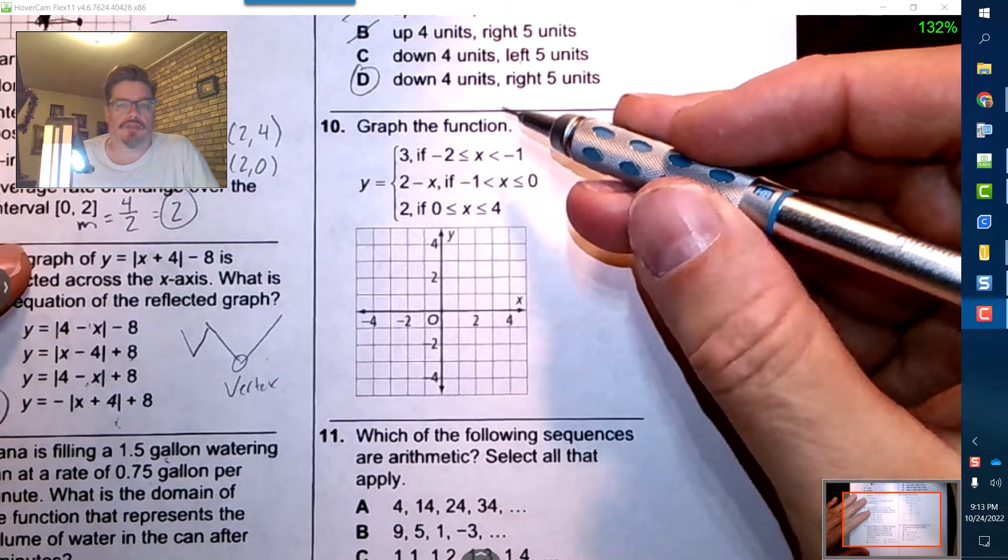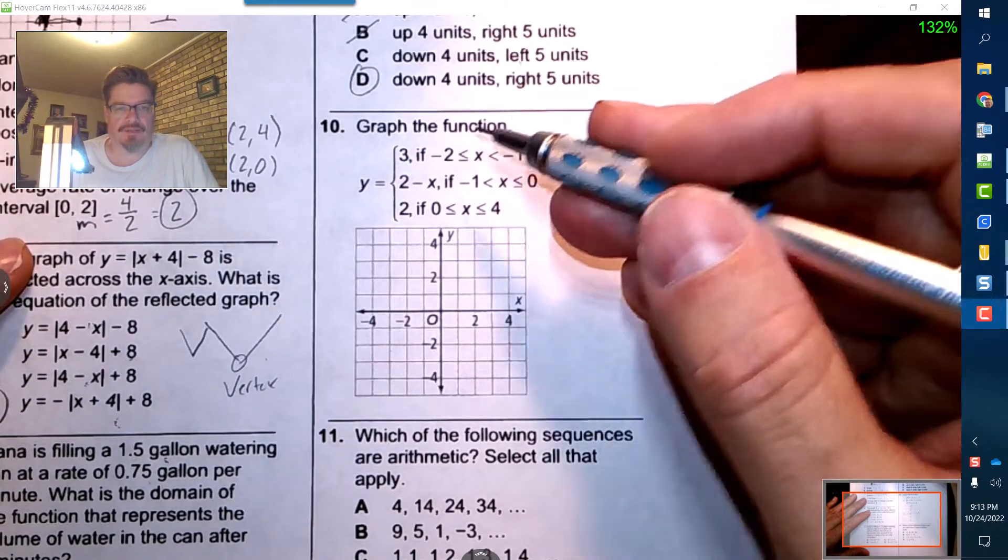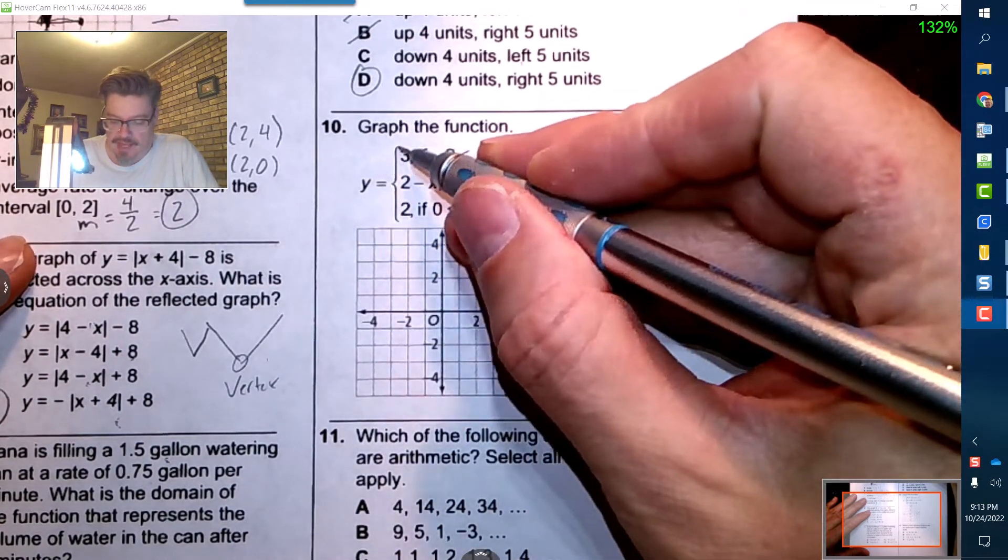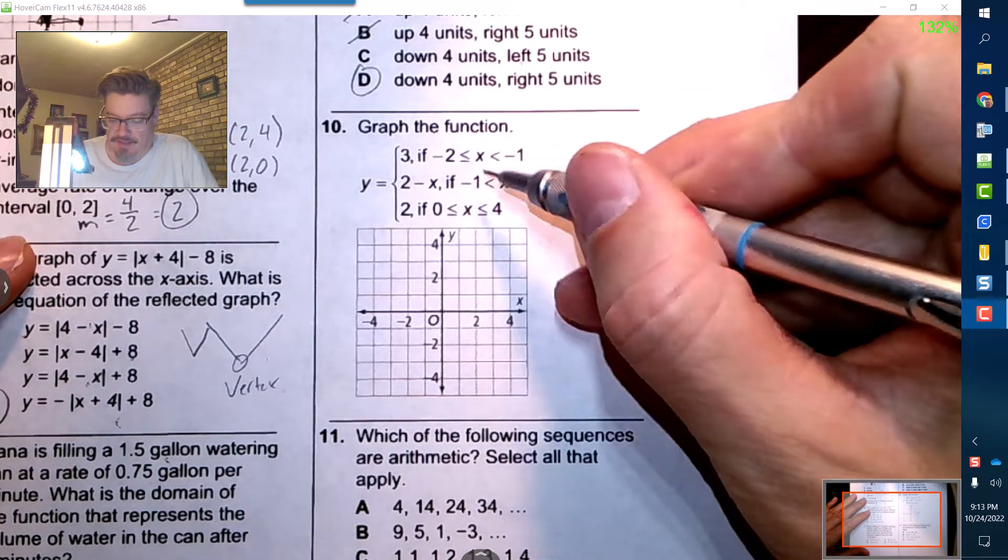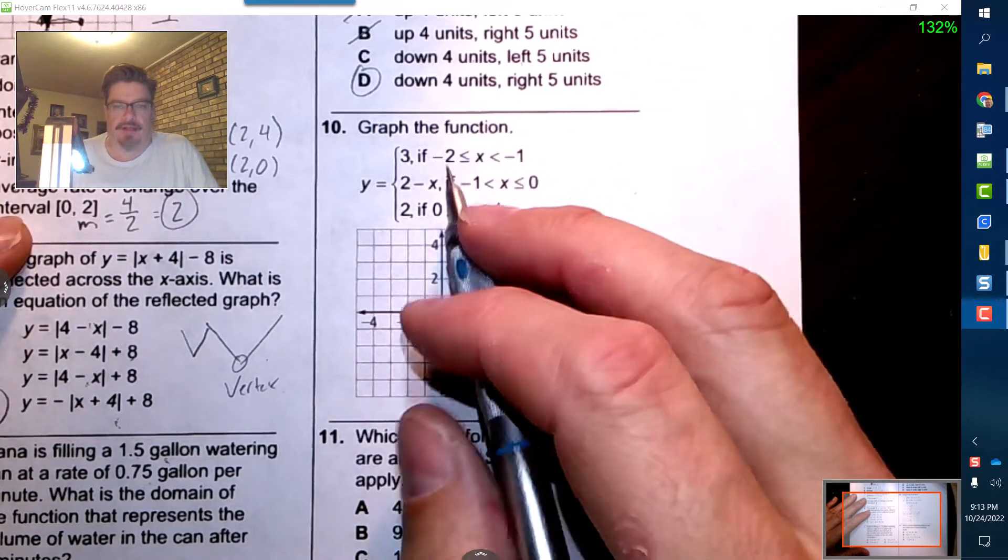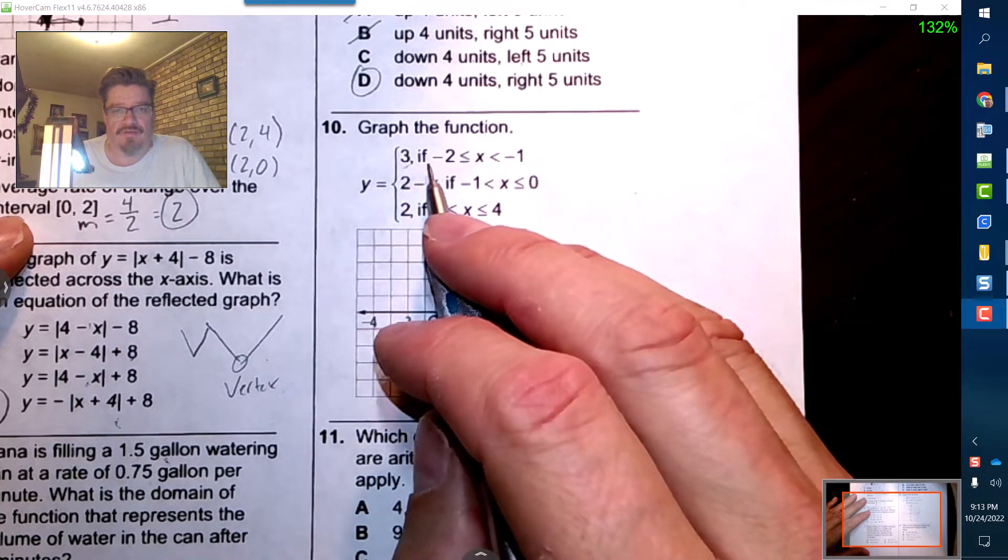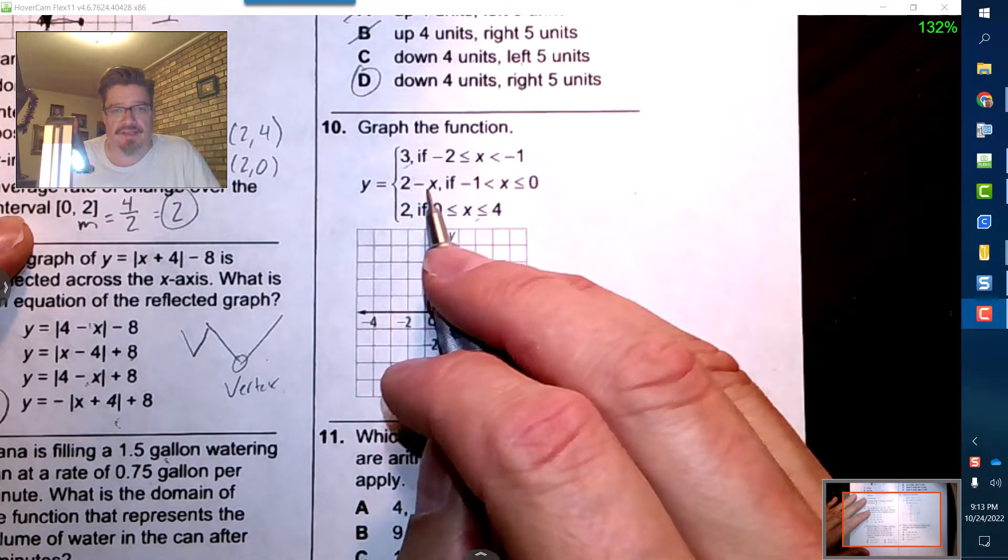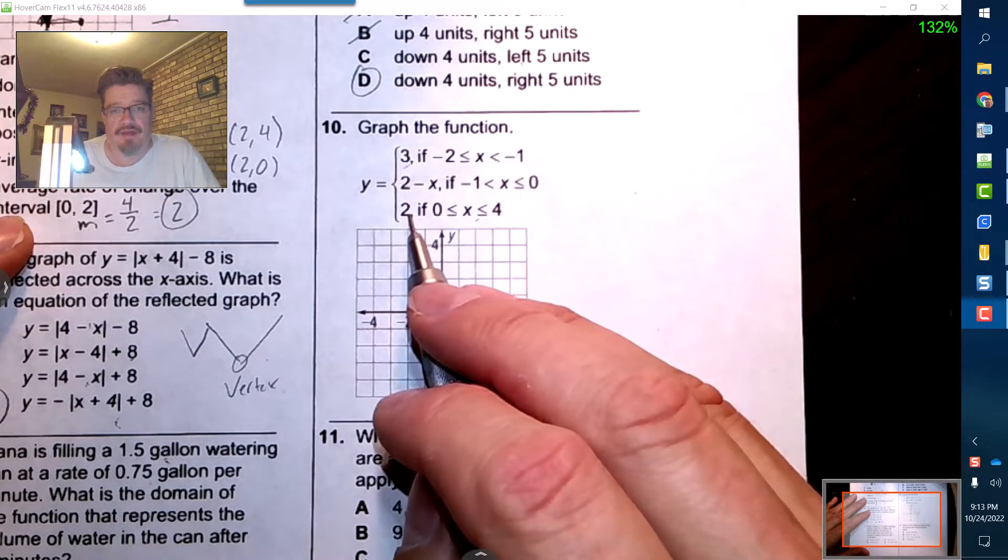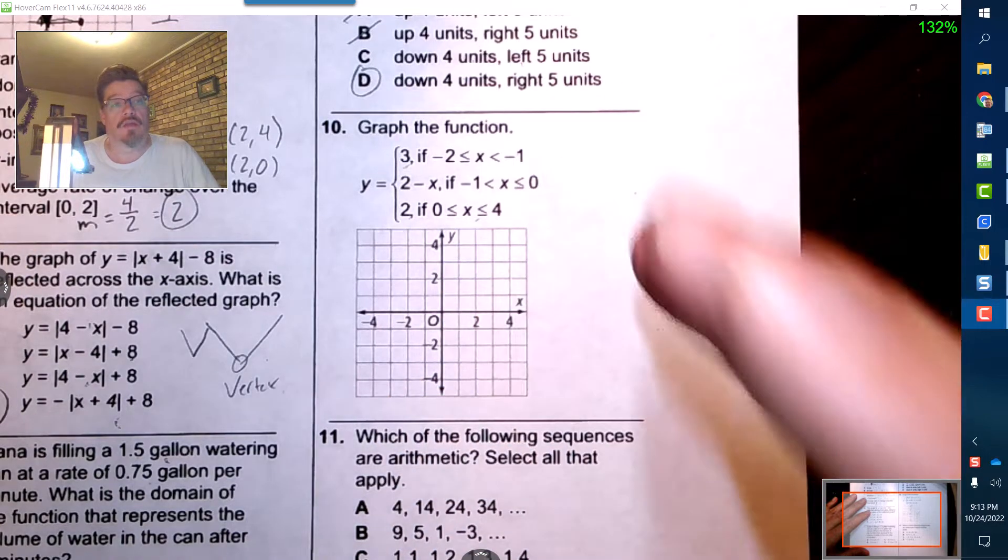Number 10, we got a piecewise function and the reason why I know it's piecewise function is because I see these squiggly brackets and then I see the subdomains. So it looks like I'm going to have this as a function for this subdomain, this as a function for this one, and finally that one for this. So three pieces.